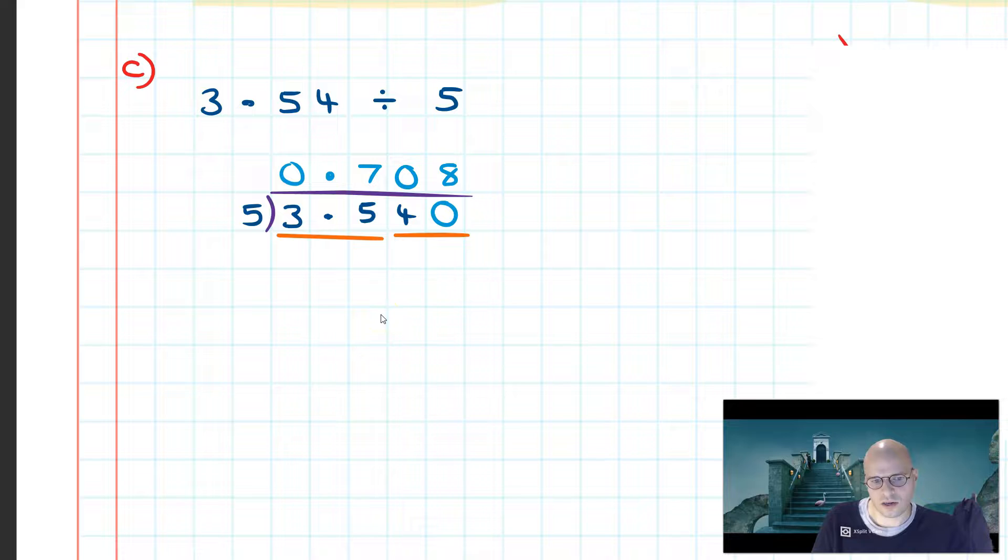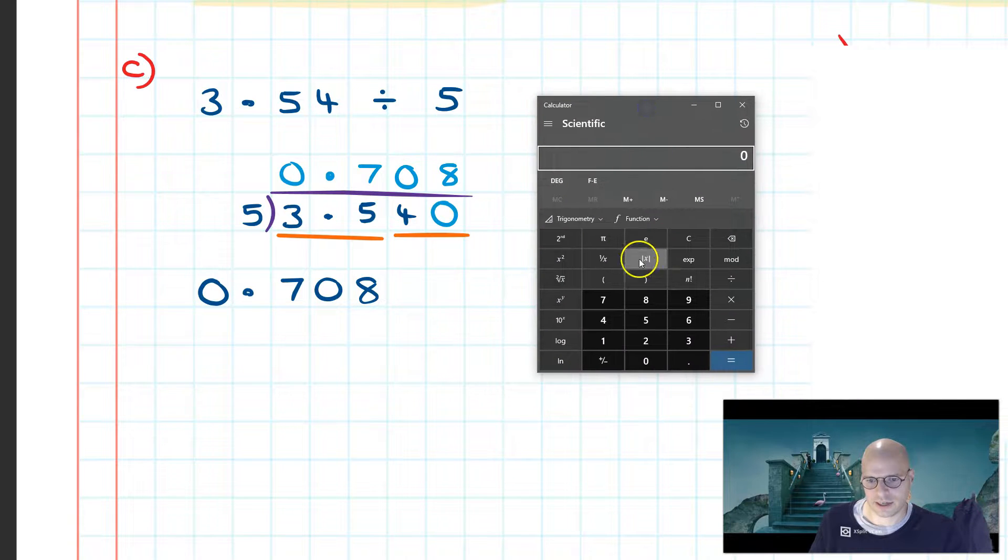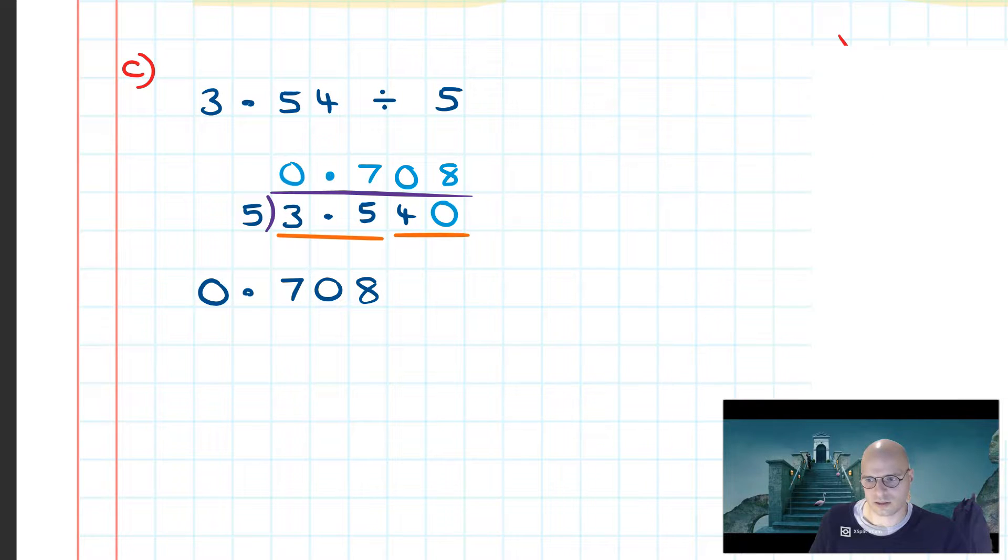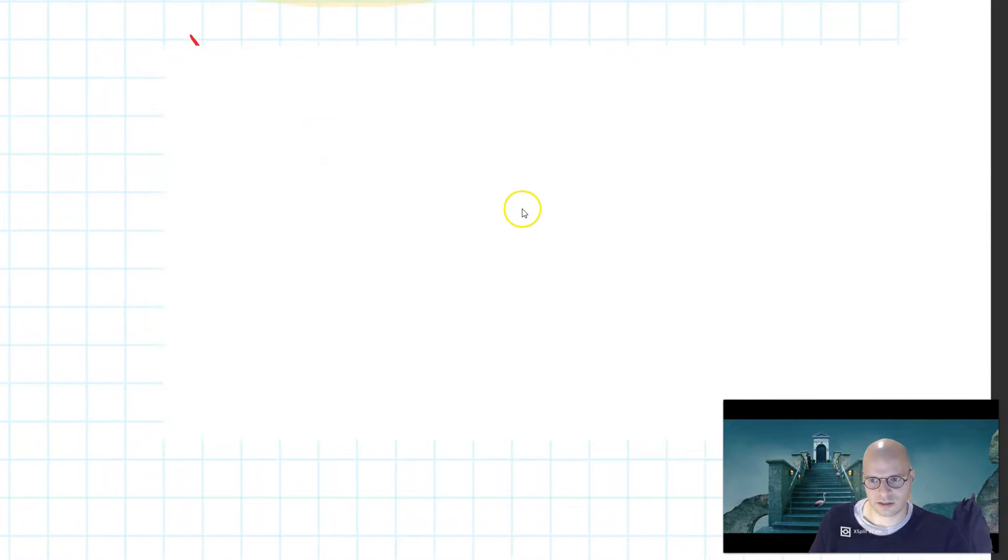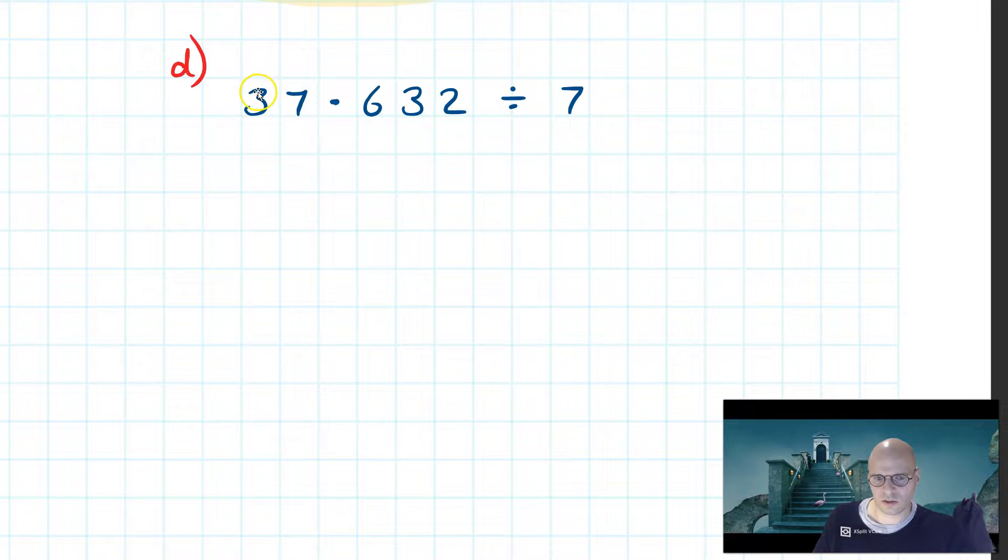Therefore I know that the quotient of this division is going to be 0.708. Verifying that this is true, I can bring up my calculator and go 3.54 divided by 5, and you'll notice it's 0.708. So we agree here. All right, let's move on. One more degree of complexity.